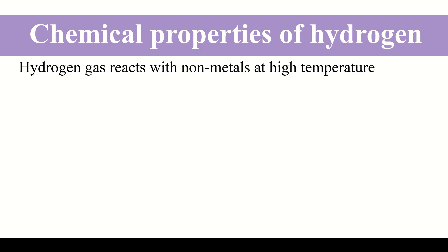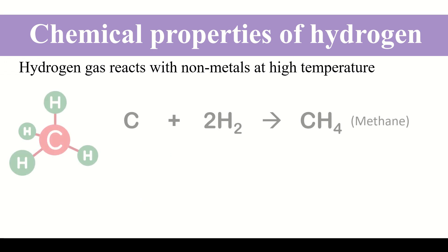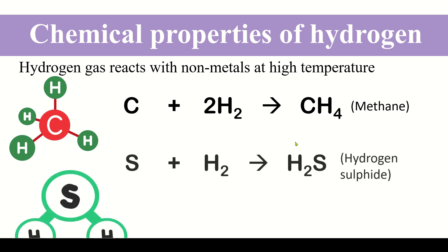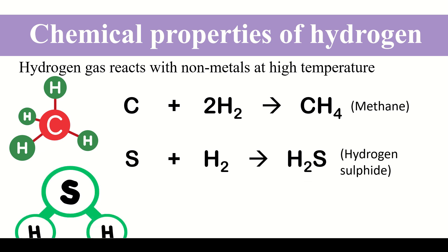Another chemical property is that hydrogen gas reacts with non-metals at very high temperature. Non-metals such as carbon, when it reacts with hydrogen gas at very high temperature, gives us methane. Similarly, another non-metal such as sulfur, when it reacts with hydrogen, gives us hydrogen sulfide.